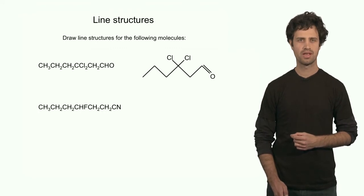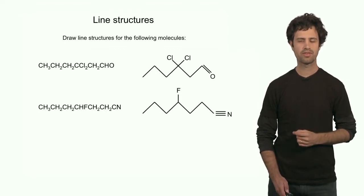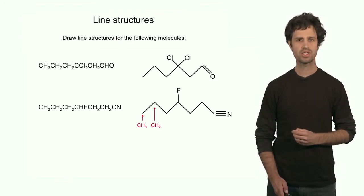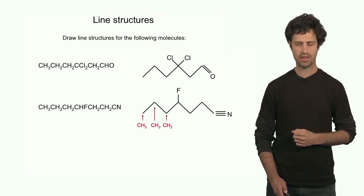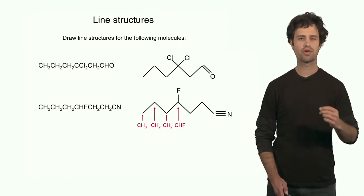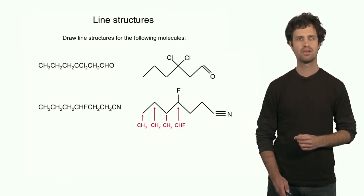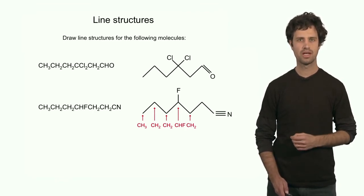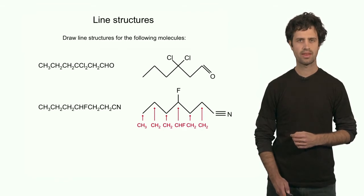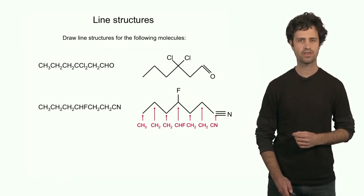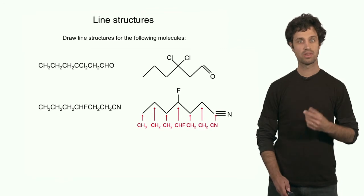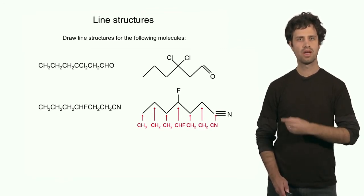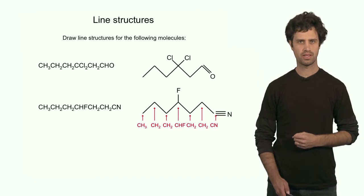Another structure. From left to right, we can read the following: a CH3 endpoint; a CH2 corner point; another CH2; then a carbon bonded to a fluorine and a hydrogen — the hydrogen is not indicated, but the fluorine is. Then a CH2 unit, another CH2 unit, and then a carbon bonded to a nitrogen. It's a triple bond because, to fulfill the rule that each carbon must have four bonds, we have to add three bonds between the carbon and the nitrogen.